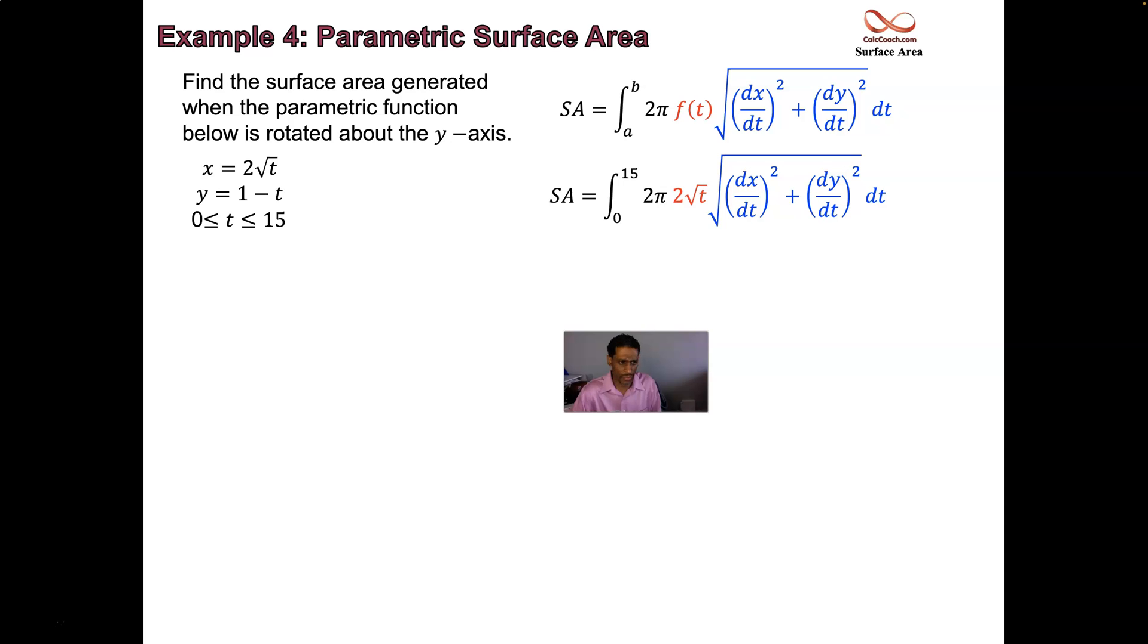What is x's derivative? What is dx/dt? So you have this 2 out here. Leave that there. √t's derivative is 1/(2√t). So the 2's actually cancel, and dx/dt will be just 1/√t. What is dy/dt? Oh, that's just -1. Your job? Square these. And then add them.